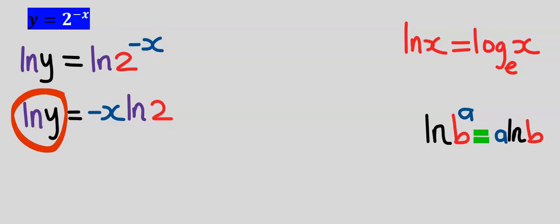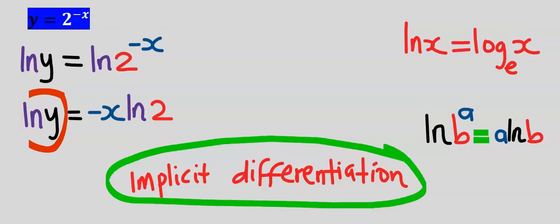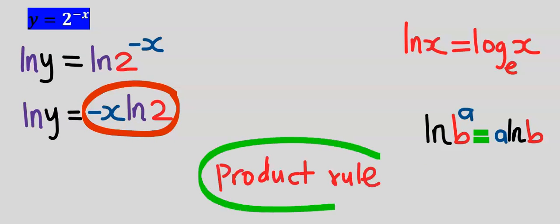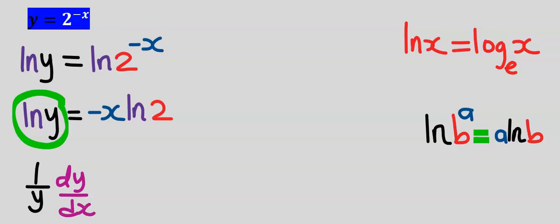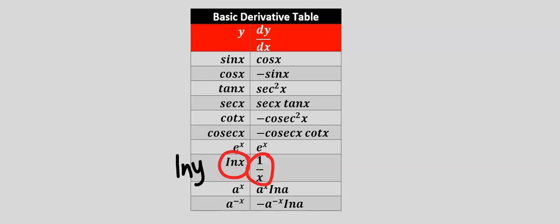Next, we're going to differentiate both sides. On the left side I'm going to apply implicit differentiation, and on the right side I'm going to apply the product rule, because these are multiplying functions. Differentiating the natural log of y gives one divided by y. However, whenever you differentiate y and not x, you must multiply by dy/dx according to the rule of implicit differentiation.